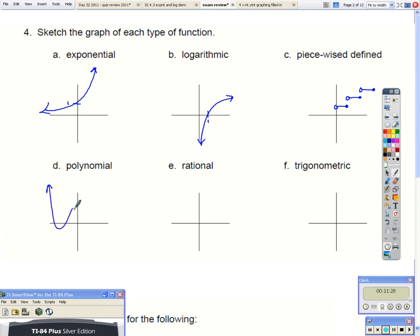Polynomial, that could be anything. That's an x to the fourth, potentially. You could have an x to the third. Rational, it's like 1 over x, would look like this. And trigonometric sine or cosine, I'll sketch a cosine graph.